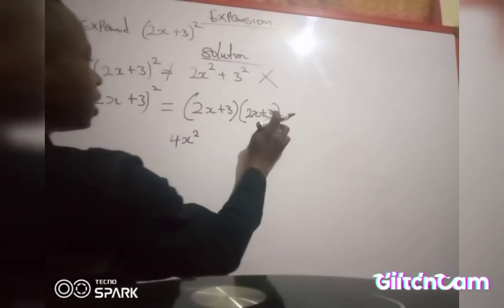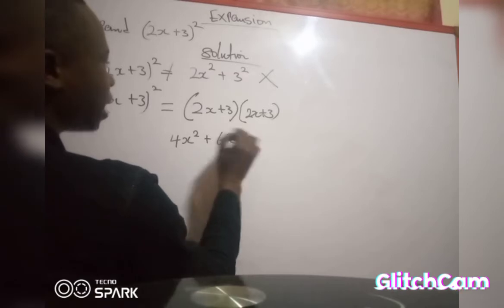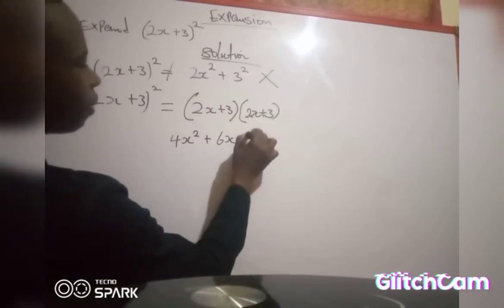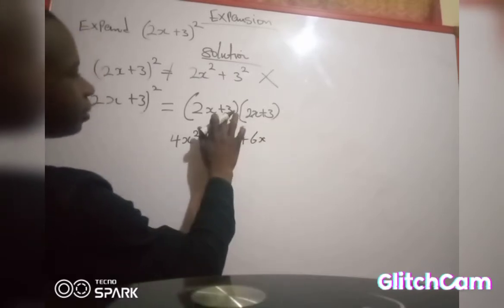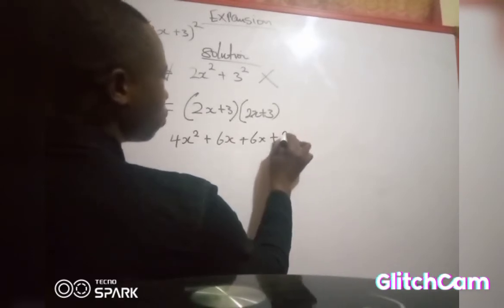Then this same 2s multiplied by this 3 I'll have plus 6s, then 3 multiplied by 2s I'll have plus 6s, then 3 multiplied by 3 is equal to 9.